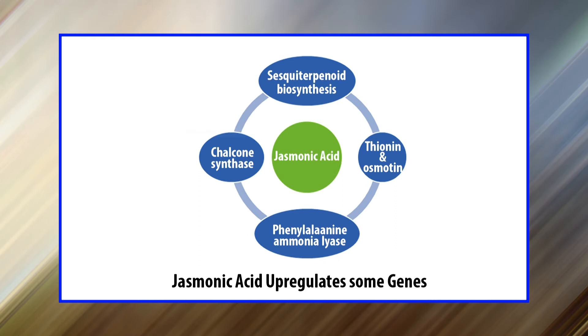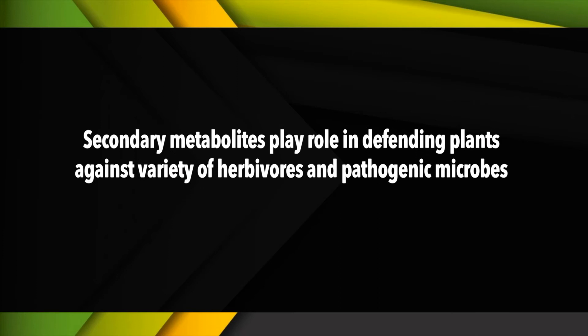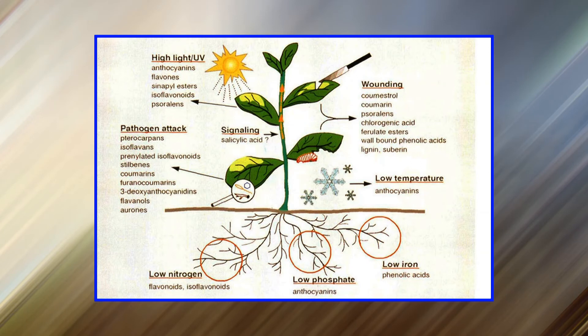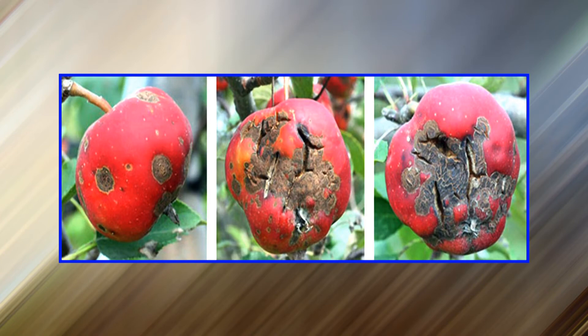Jasmonic acid also induces genes for sesquiterpenoid biosynthesis, hydroxymethylglutaryl-CoA reductase, thionin antifungal protein, and osmotin antifungal protein. Secondary metabolites defend plants against herbivores and pathogenic microbes. Furthermore, jasmonic acid treatment in strawberry fruit makes it resistant against Botrytis cinerea. Jasmonates also play a role in plant defense against environmental stress: application of jasmonate decreased low-temperature injuries such as splitting and spotting in apple fruit, and UV radiation or water stress-induced endogenous jasmonate synthesis in apple seedlings and one-year-old citrus trees has been reported.